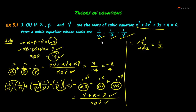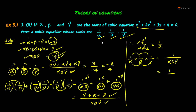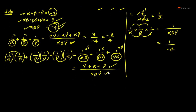Now we multiply all three roots together: (1/alpha)(1/beta)(1/gamma) = 1 divided by alpha·beta·gamma. The value of alpha·beta·gamma is -4, so the product of the new roots equals 1/(-4) = -1/4.